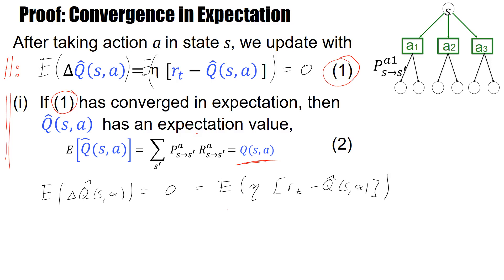Now eta here is just the multiplier, so we can move it in front, and that means also we can neglect it. Because if I move this in front and make it equal to zero, that means I can remove it. And now what remains is a sum. Now the expectation is a linear operation, so I apply to the sum. This gives me the expectation r_t minus the expectation q hat s,a.